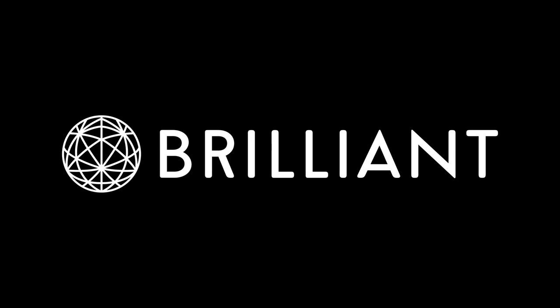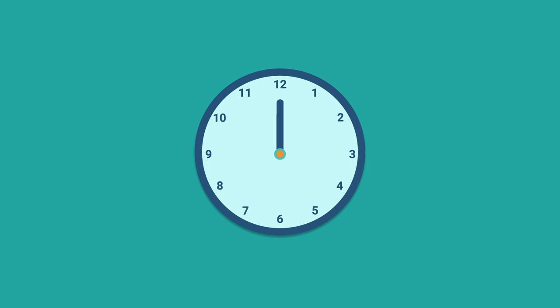This video is sponsored by Brilliant. Let's say you have a 12-hour clock that is mostly normal. It starts at 12 and as time goes on, the hour hand and minute hand move continuously around the clock as they should, and there's no second hand here.